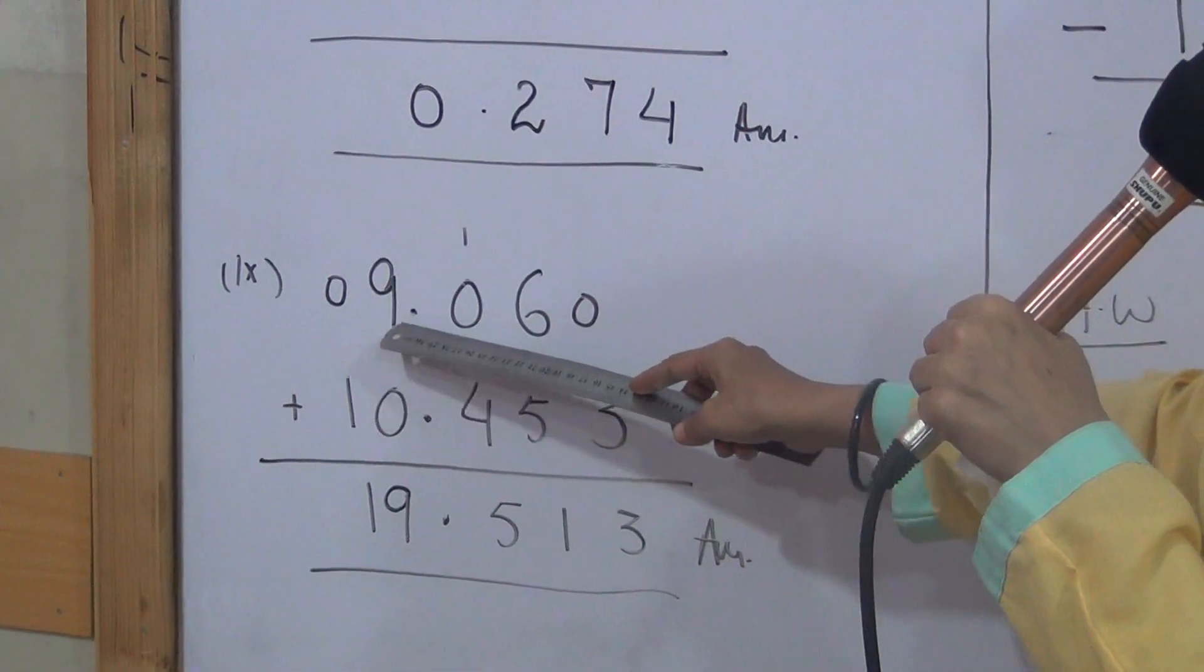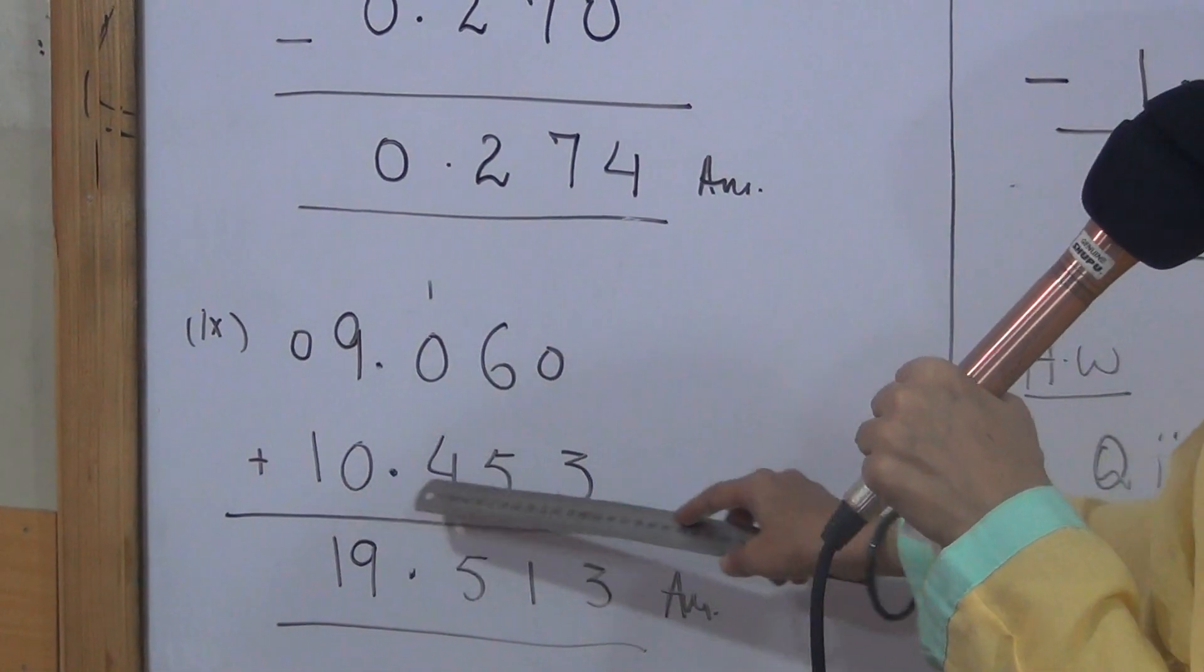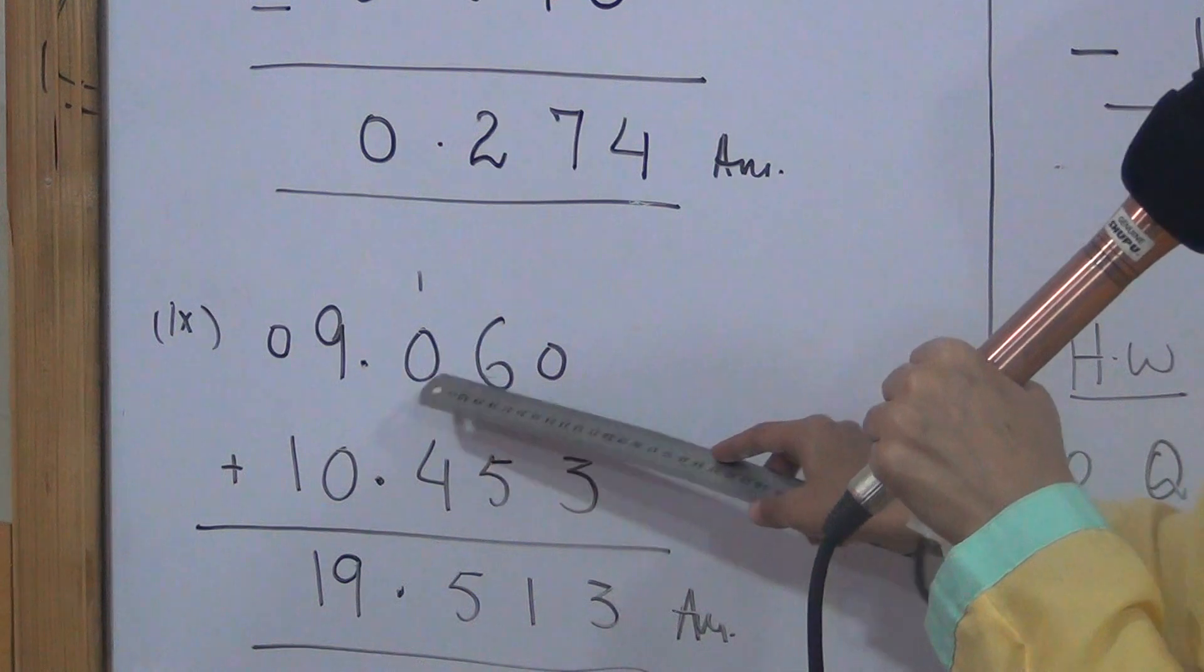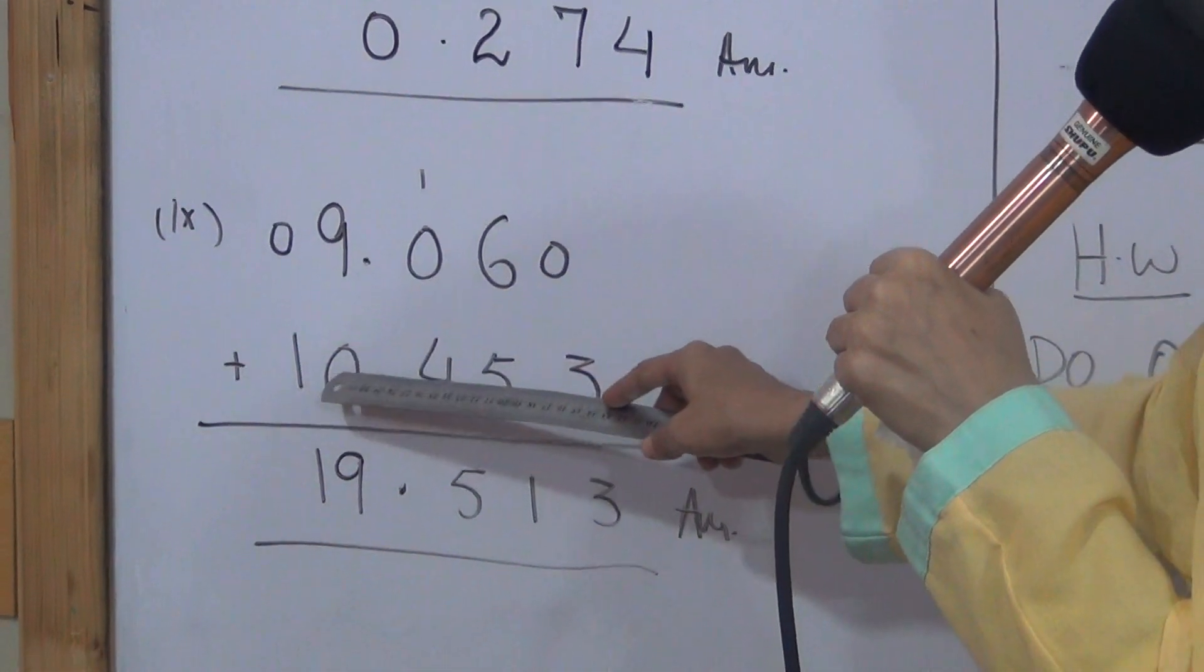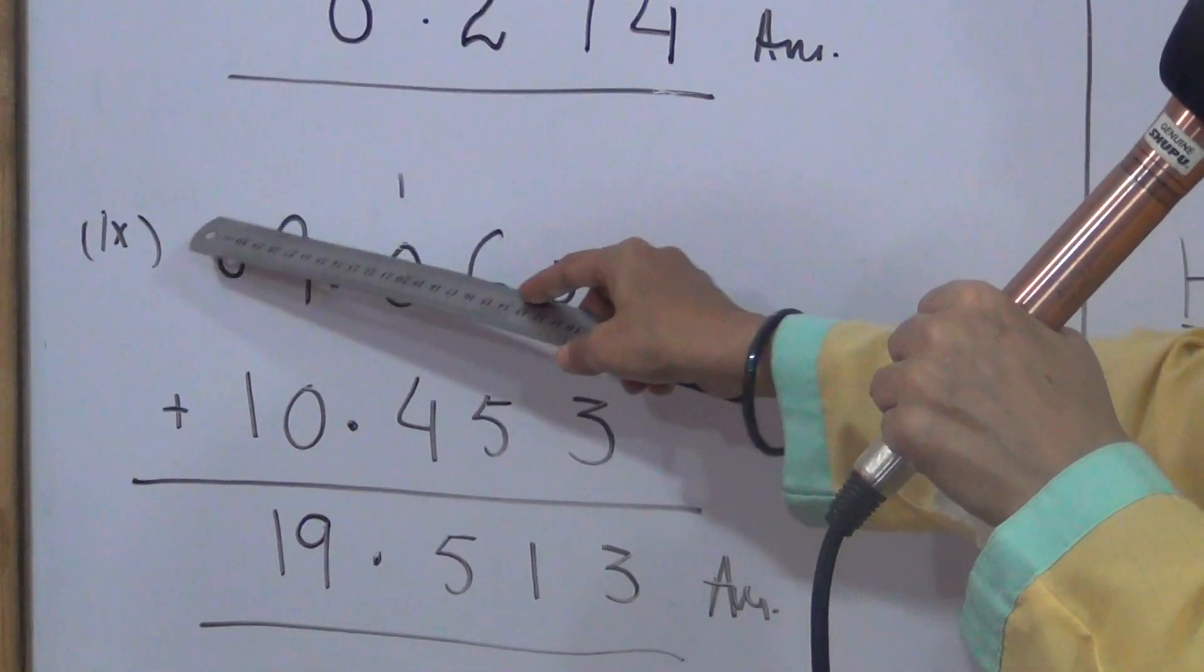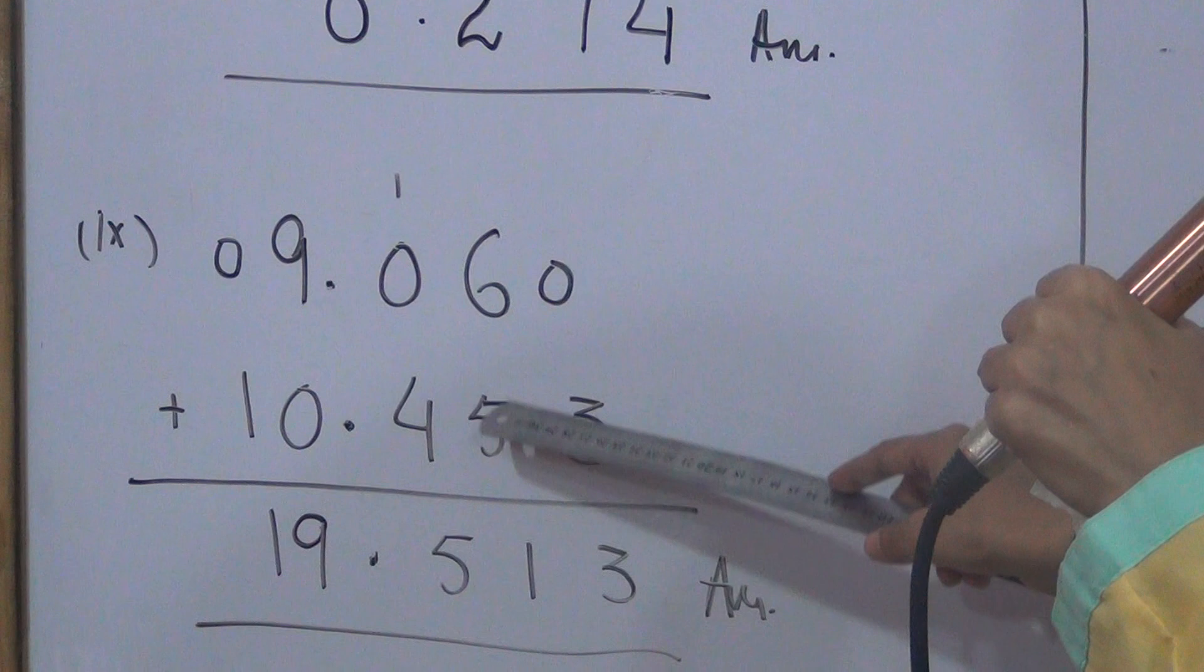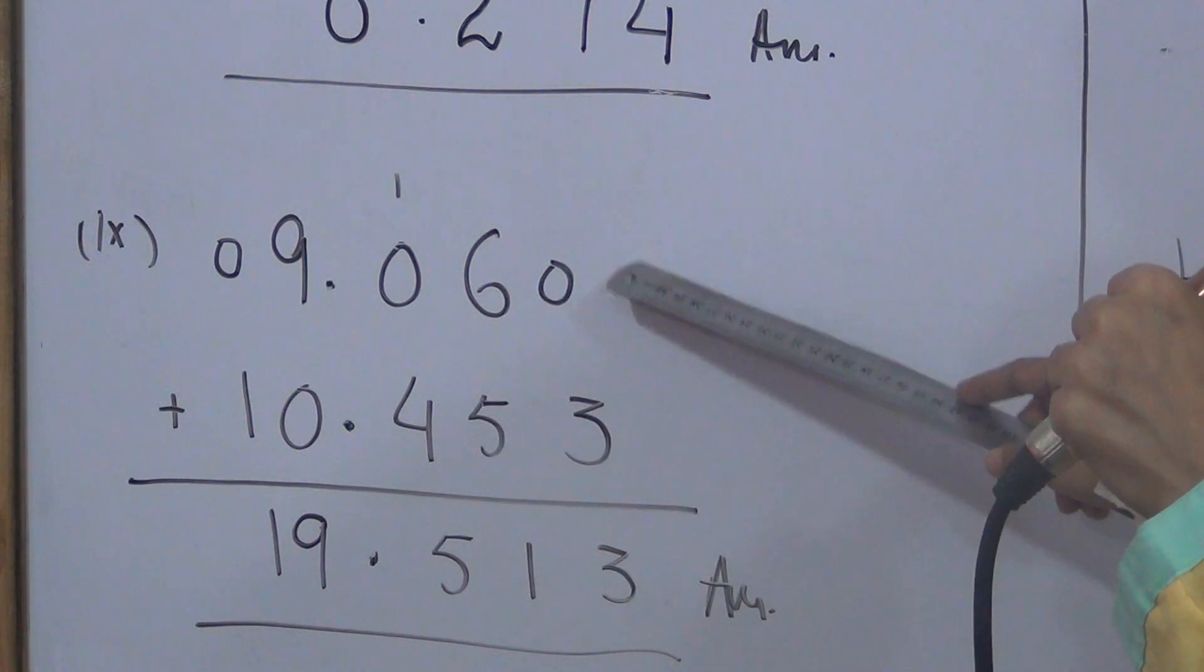Now I have done question number nine for you. Question number nine is 9.060 plus 10.453. Again, nine is before the decimal point, which is the whole number. 0-6-0 is the fractional part. Point below point. Ten's zero comes below nine and one comes before, where there is an empty space which I filled with zero. Four comes as the first digit of fractional part. Five comes below six as the second digit. Three is the third digit and comes below.